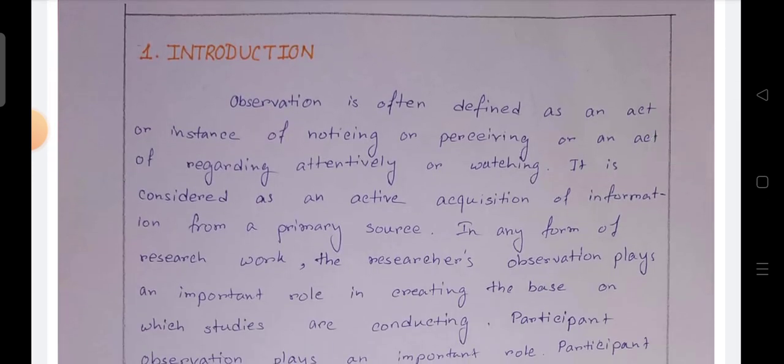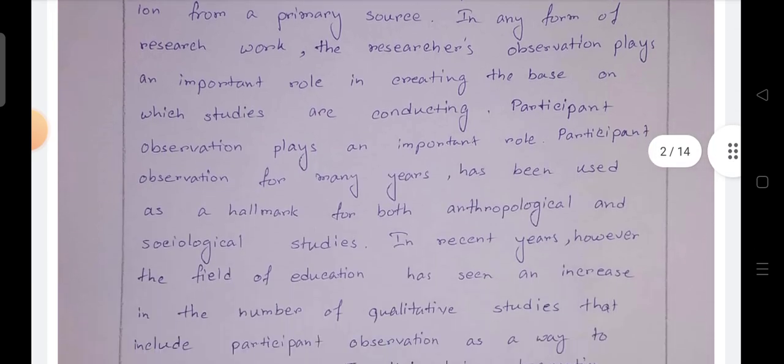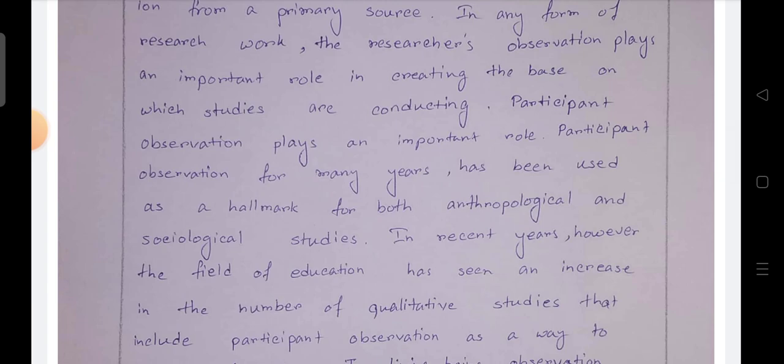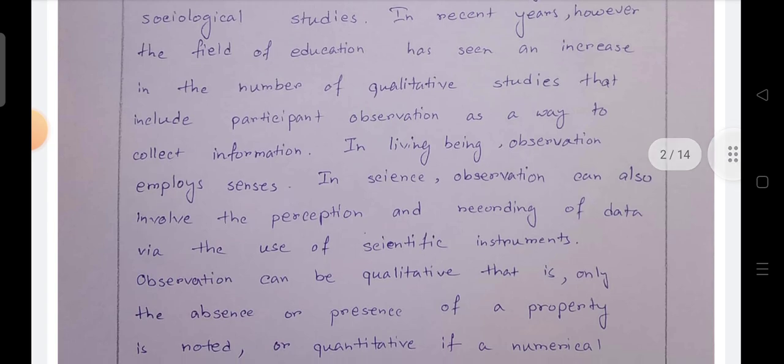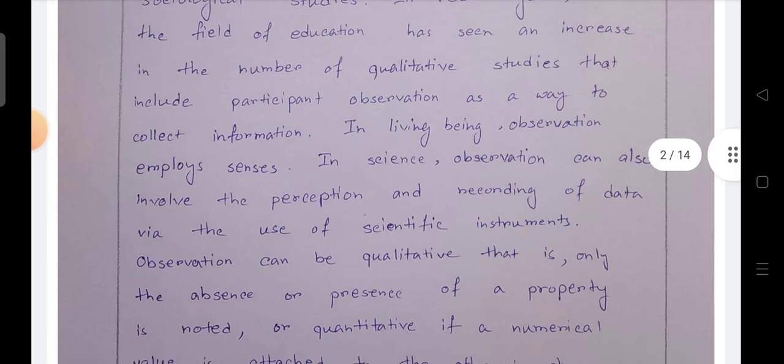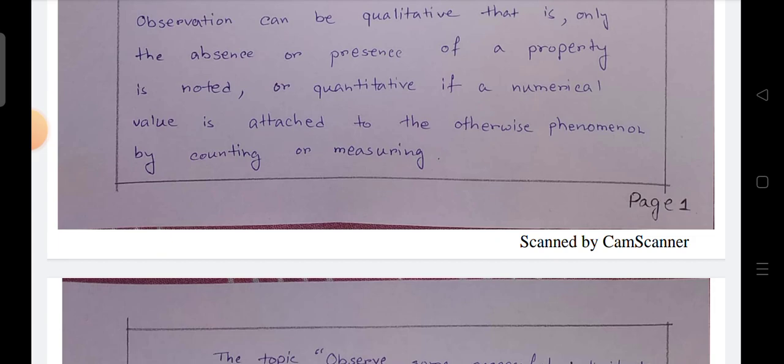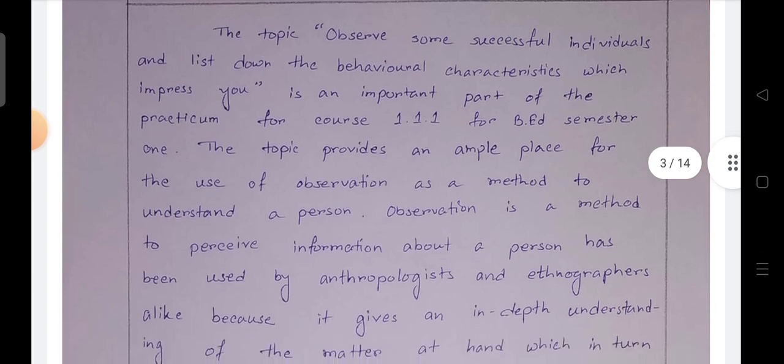First part: introduction. Observation is often defined as an act or instance of noticing or perceiving, or an act of recording attentively or watching. Participant observation plays an important role. In living being observation employs senses. In science, observation can also involve the preparation and recording of data. Presence of a property is noted, otherwise phenomenon by continuing of measuring.